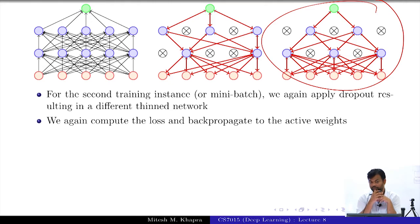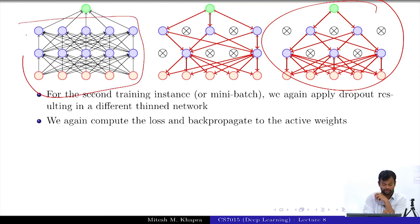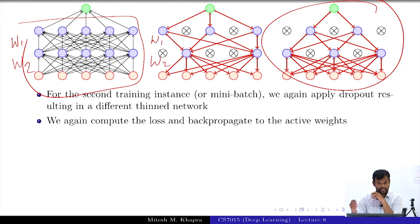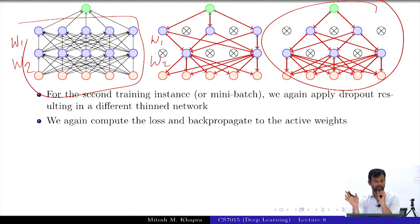That means for a particular network the parameters are getting updated very few times. But we are fine with that because the same weights get updated for a different network — we are just using the same weight matrix throughout. The W1, W2 matrices are the same throughout; at different instances we just touch some portions of W1 and not others.